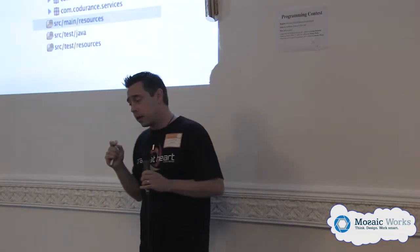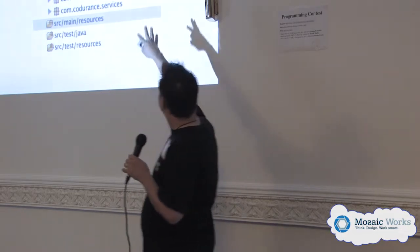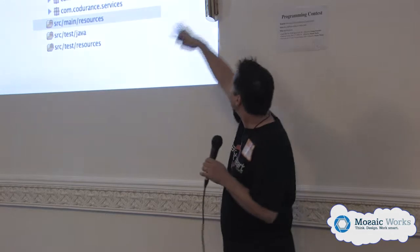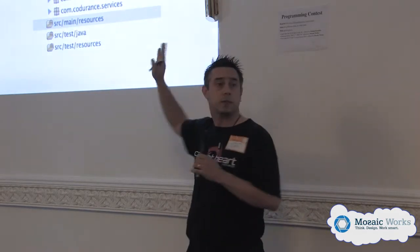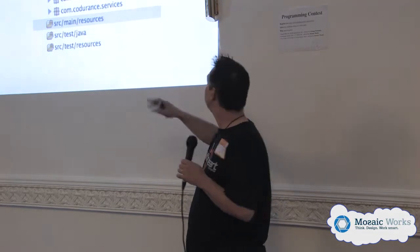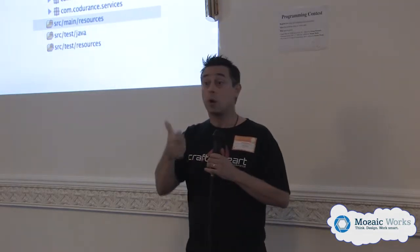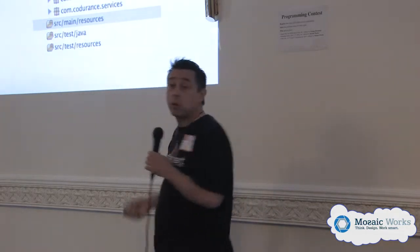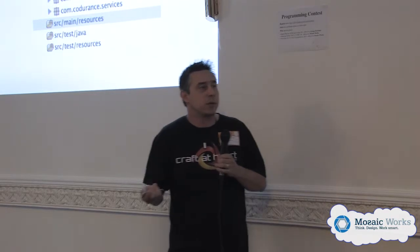So this is one example I'm talking about. If you look at this, how many of you structure like that — you have controllers, DAOs, factories, helpers? Some of you. We have controllers, awesome, we have DAOs. What does it do? What is this about? I have no clue whatsoever.